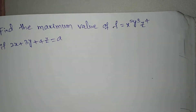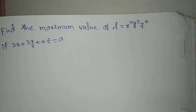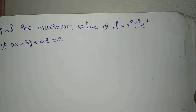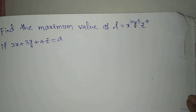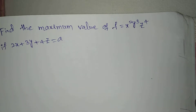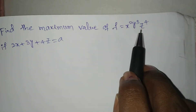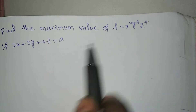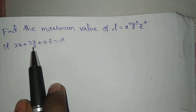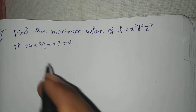Welcome to Rajesh Lekaru. Today our topic is Lagrange's method of undetermined multipliers. This is a maximum value problem. Find the maximum value of f equal to x squared y cubed z to the power 4, given the condition 2x plus 3y plus 4z equal to a.